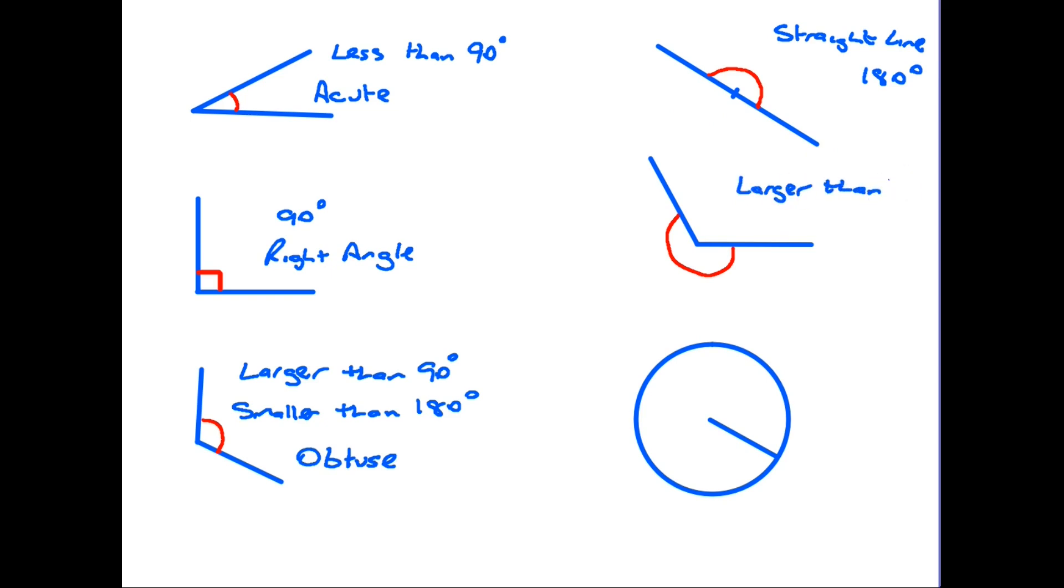an angle that kind of bends back on itself here, we call this a reflex angle. It is larger than 180 but not a whole circle, because a whole circle is the one on the bottom right here. It is all the way round the angle and it is of course 360 degrees, a whole turn.